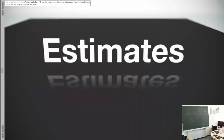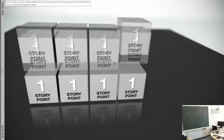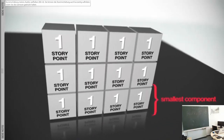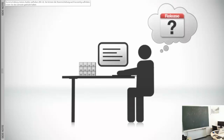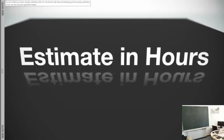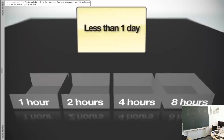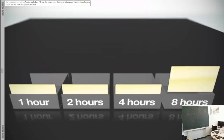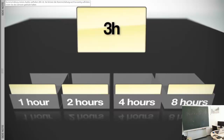A quick side note about estimates: there are a lot of techniques for creating good estimates. Some prefer estimating in story points, where estimates are made relative to building a small component with a known level of difficulty. Unfortunately, story points don't answer the question of when will my project ship. The best technique is to estimate work in hours using standards: things that take less than a day are estimated as one hour, two hours, four hours, or eight hours. Every item will fall into one of those buckets — there will be no three-hour estimates, for example; a three-hour item falls into the four-hour bucket.